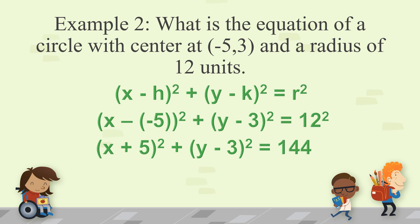Take note: when you have a negative h, it changes sign in the equation. So if h is negative 5, it becomes positive in the equation; if k is positive 3, it becomes negative 3 in the equation. Then take r, which is 12, square it to get 144.